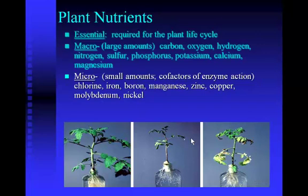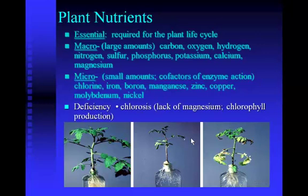Micronutrients are nutrients needed in small amounts — usually cofactors for different enzymes in the plant, like chlorine, iron, manganese, zinc, and copper. When you have a shortage or deficiency of a nutrient, you can get something called chlorosis, the most famous being the lack of magnesium. When a plant lacks magnesium, it will start to turn yellow because it can't make enough chlorophyll — remember, magnesium is the ion at the center of a chlorophyll molecule.